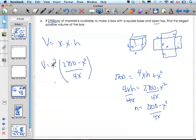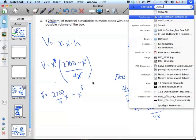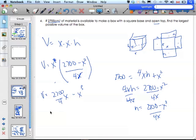Now, solving this, I can cancel this x with one of those x's. And so then volume, distribute the x in, I get 2,700 over 4 times x minus x cubed over 4. 2,700 divided by 4 is 675. So I get 675x minus x cubed over 4.